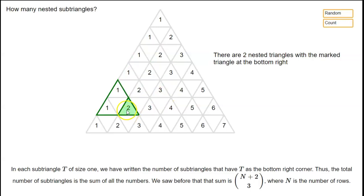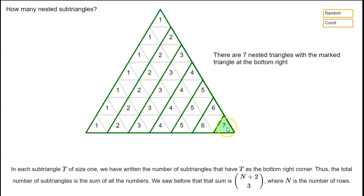And similarly here we have two possibilities, here we have three possibilities, and if we go all the way down to the bottom right corner of the main thing then there's seven possibilities for a triangle with this highlighted triangle as the bottom right corner. We can have one of size 1 or 2 or 3 or 4 or 5 or 6 or 7.